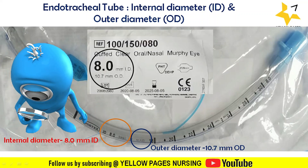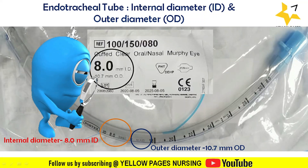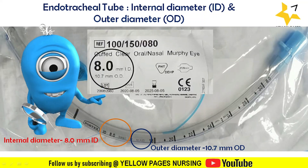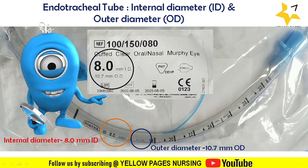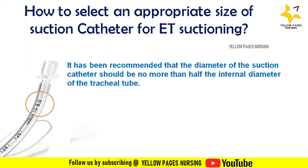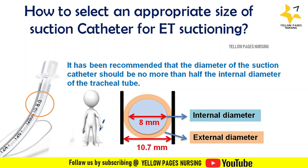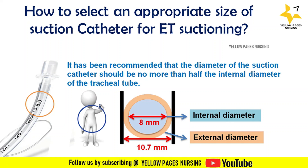It has been recommended that the diameter of the suction catheter should be no more than half the internal diameter of the tracheal tube. In this example, the internal diameter is 8 mm and the external diameter is 10.7 mm. For calculating the suction catheter size, we use the internal diameter.